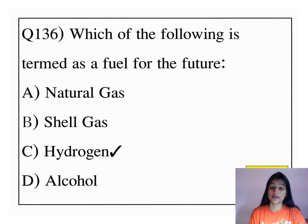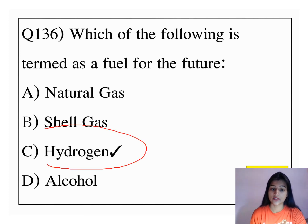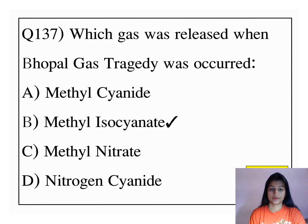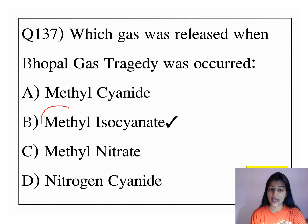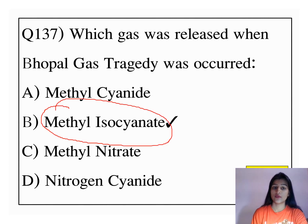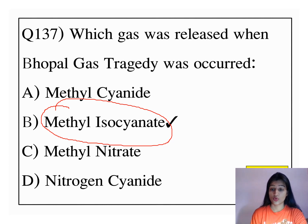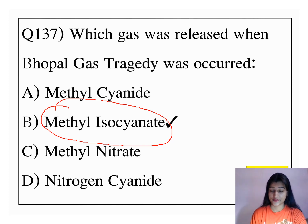Which of the following is considered the fuel for the future? Hydrogen is considered the fuel for the future. Which gas was released when the Bhopal gas tragedy occurred? It was methyl isocyanate, which was released during the Bhopal gas tragedy. This is the most harmful and poisonous gas.